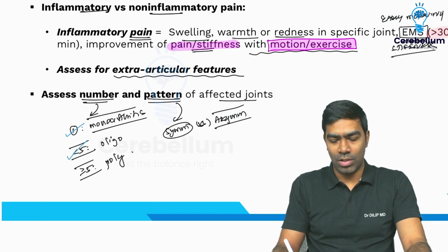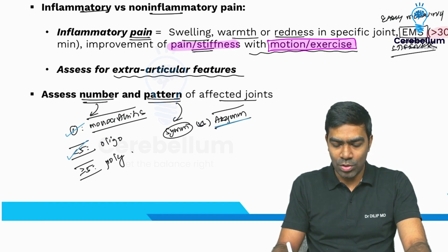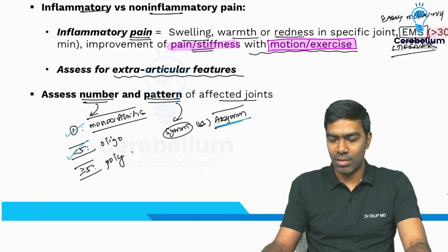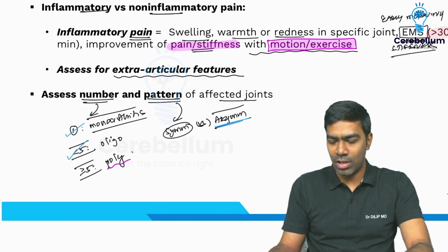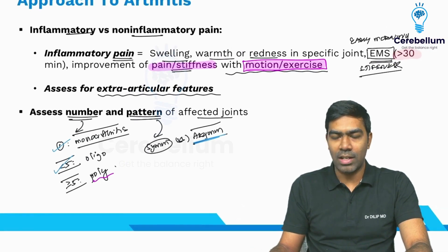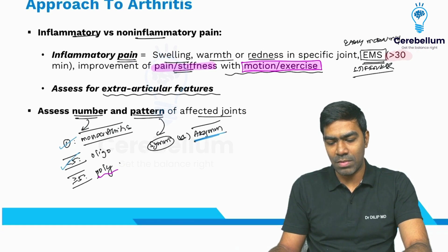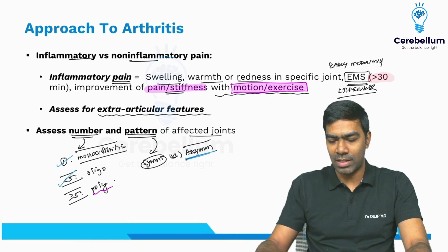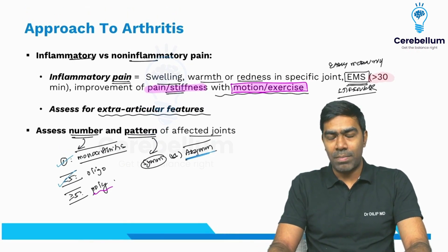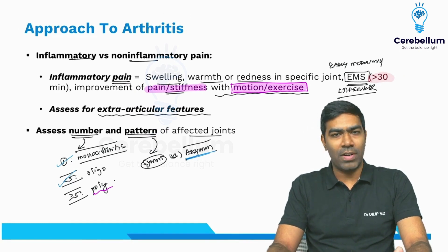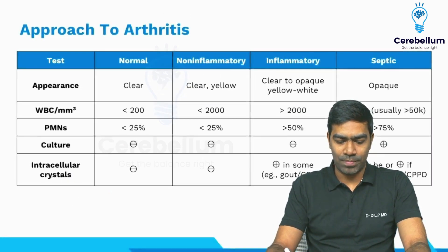Less than five joints will usually also be asymmetric most of the time. Polyarticular involvement will generally be symmetric — this is not a strict rule, but it's what we see in clinical practice. Apart from that, there are other patterns like additive, migratory, and repetitive patterns, though those different types of arthritis are not important at the undergraduate level.